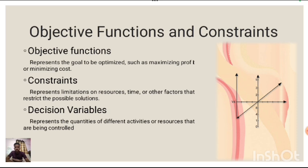Objective Functions and Constraints. First, objective functions represent the goal to be optimized, such as maximizing profit or minimizing cost. Second, constraints represent limitations on resources, time, or other factors that restrict the possible solutions. Third, decision variables represent the quantities of different activities or resources that are being controlled.